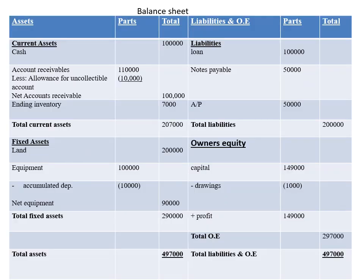Then you are required to prepare the balance sheet. The balance sheet has two sides: on one side we have the assets, and on the other side we have the liabilities and owner's equity. In the assets section, we start with current assets and then fixed assets. First, in current assets, we have cash — just copy the cash value from the adjusted trial balance.